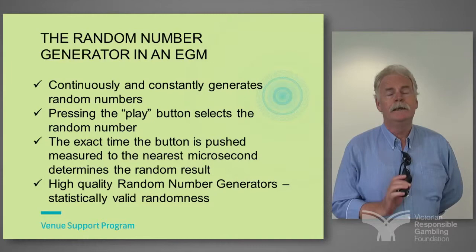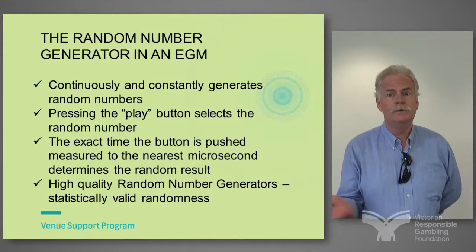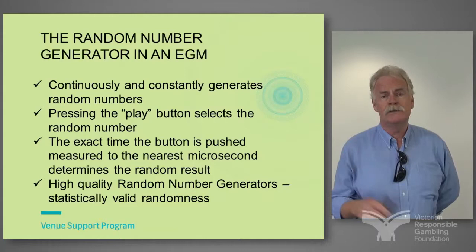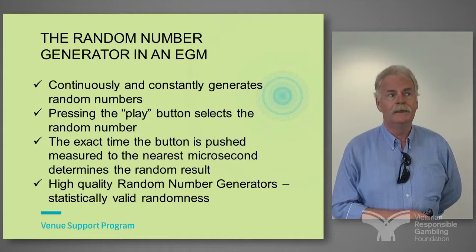In Victoria it continuously and constantly generates a random number, whether the machine is being used or whatever — it continually spins a random number at the rate of approximately a million a second. Your computer operates in megahertz, and this is a computer — it does the same thing.